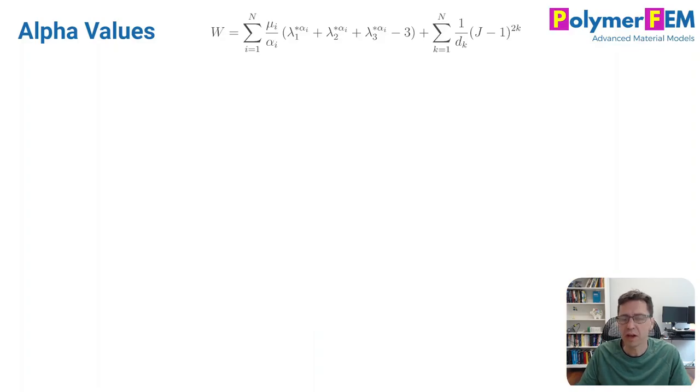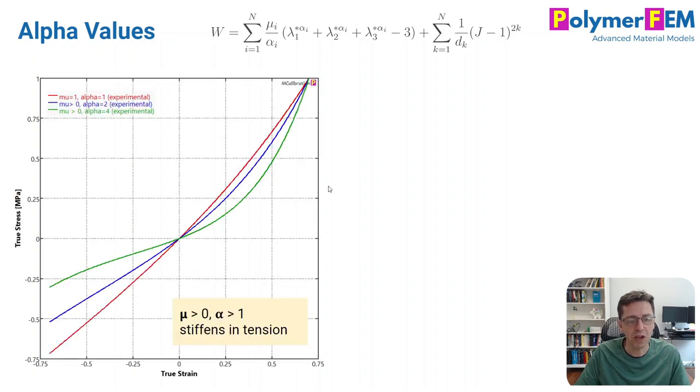Third point is the alpha parameters. Most of the action in the Ogden model comes from the alpha parameters. That controls all the cool features that you can predict using this model. So let's take a look.